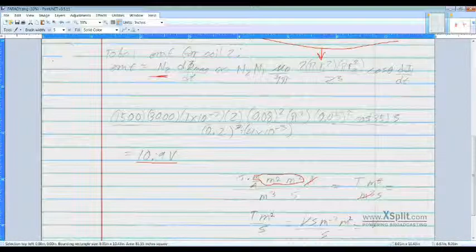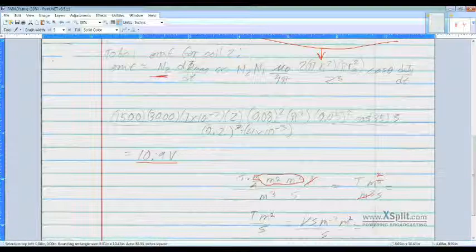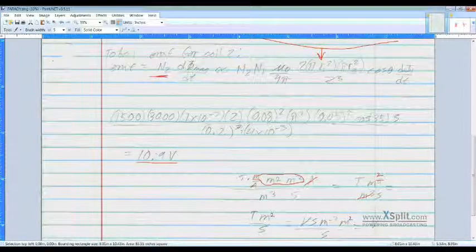And that gives us Teslas times meters to the fifth over meters cubed times seconds. We'll cancel that out. Simplify some more. Tesla meters squared over seconds.